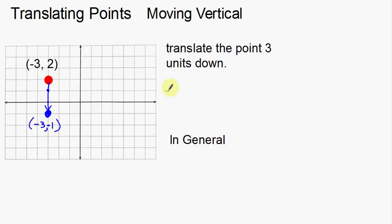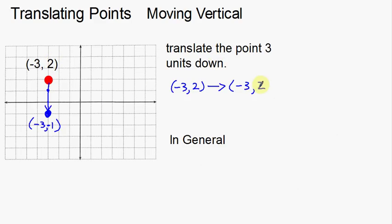So let's use a little bit of notation to see how that changed. We started with negative three, two and translated it. The negative three, the x coordinate, just stayed the same. But the y coordinate — we took this two. If the point is going down three units, we go from two to negative one. If I want to go down three units, that means I'm going to subtract three from the y coordinate. I take this two, this y coordinate, and subtract three from it. That's moving down three, and that changes the point to negative three, negative one — the same as what we have in the picture.